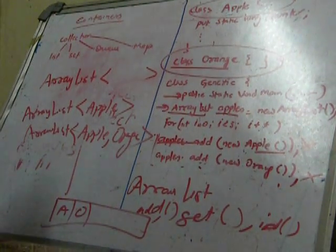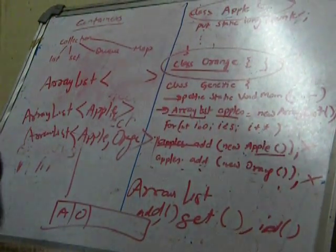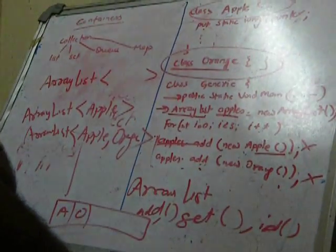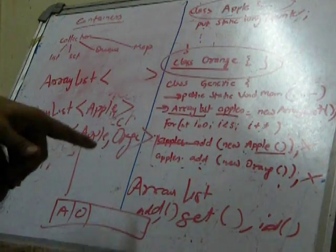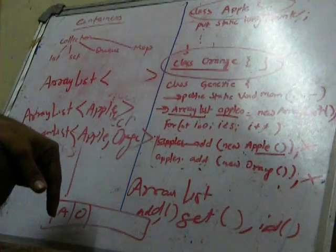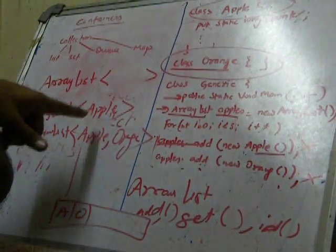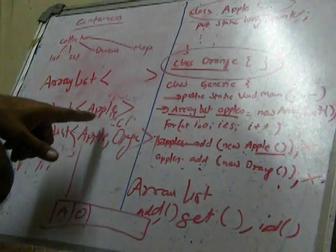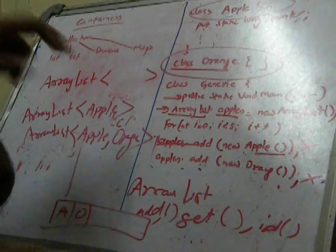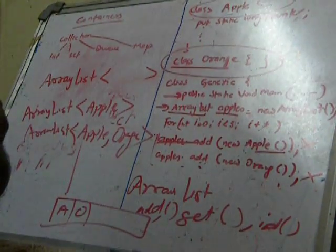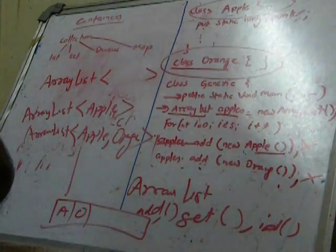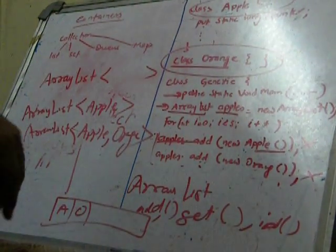And this would work. So basically what is the benefit? It is going to help me in the sense that this time I would be able to compile it and run it correctly. But if I'm using this format and trying to put the object of Orange though I have declared only for Apple, it will give me the compile time error. Basically it is improving my process. So this is the benefit of using one of the basic benefits of using generics.